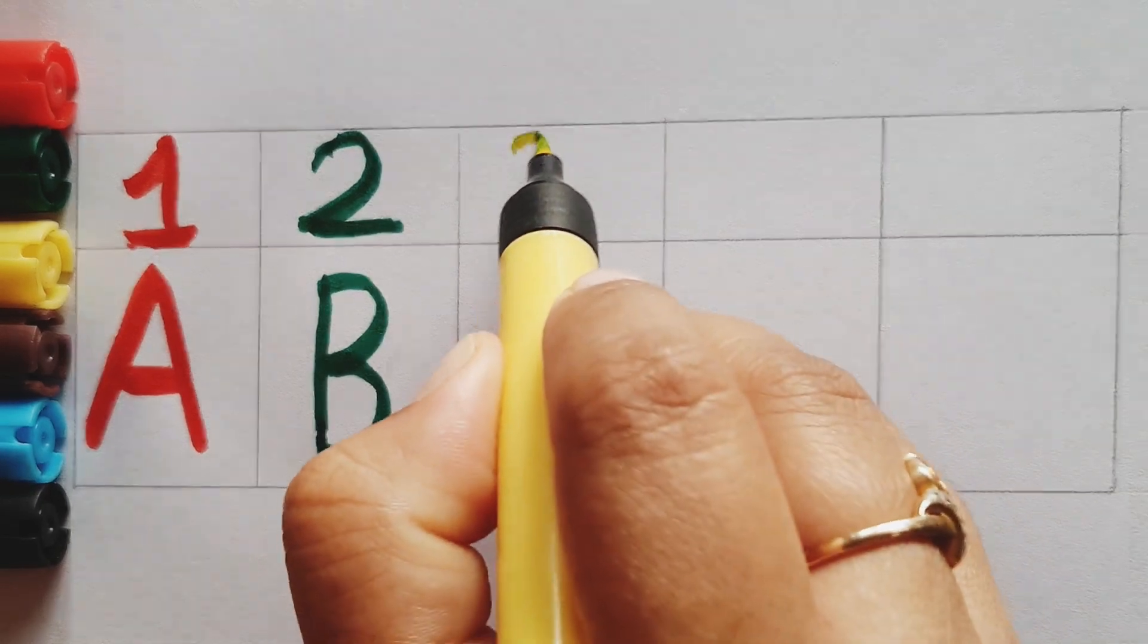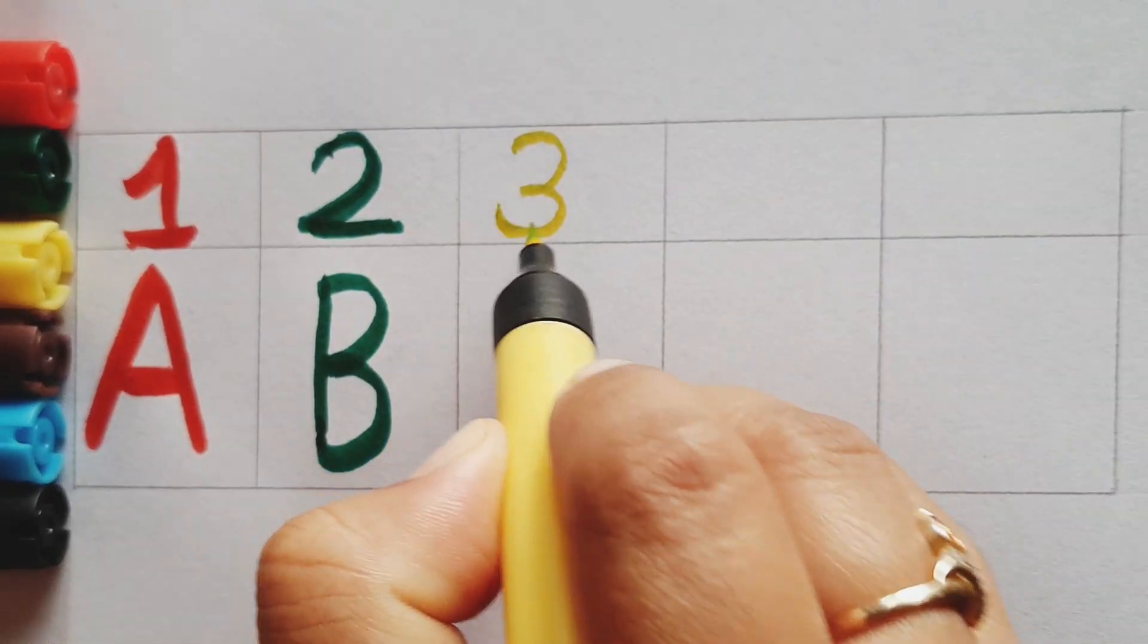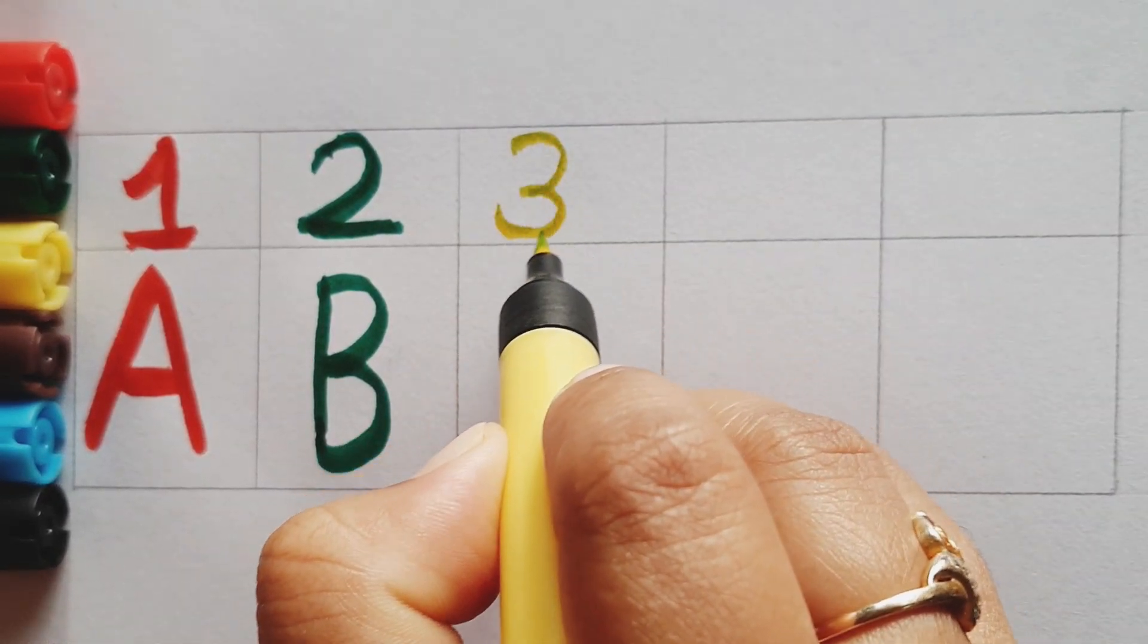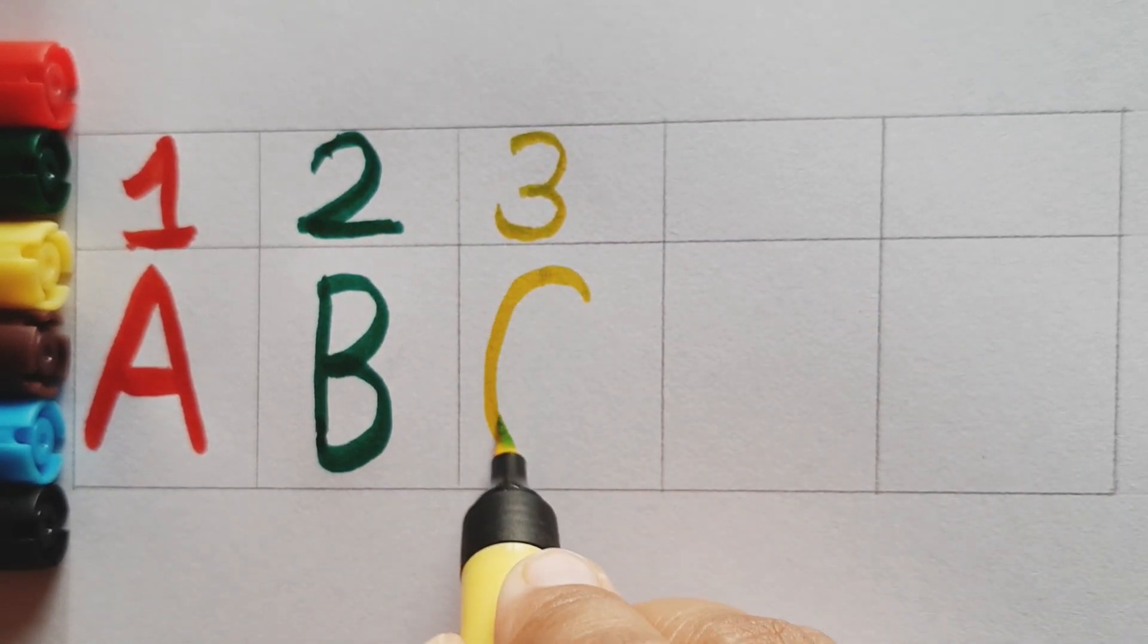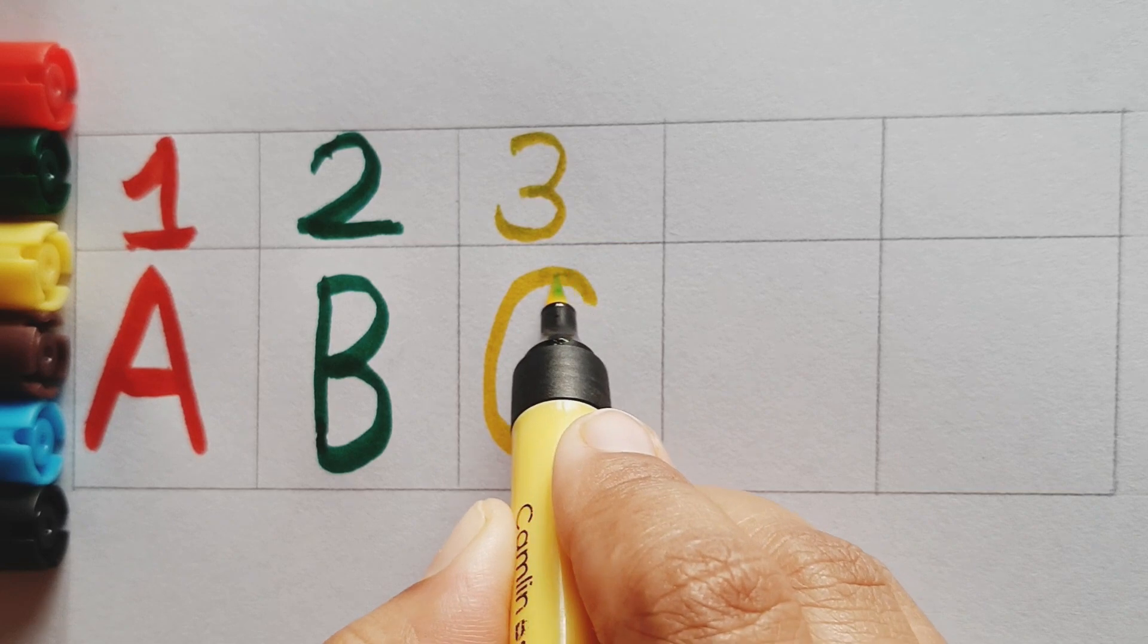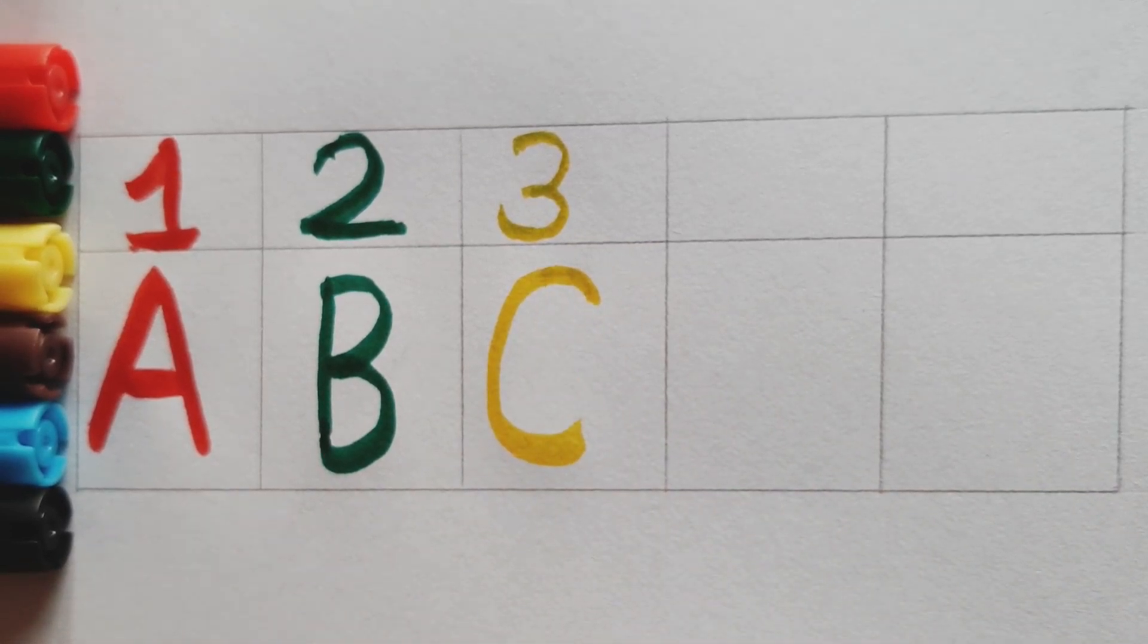Number three, number three. C, capital C. C for cat. Cat means billi.